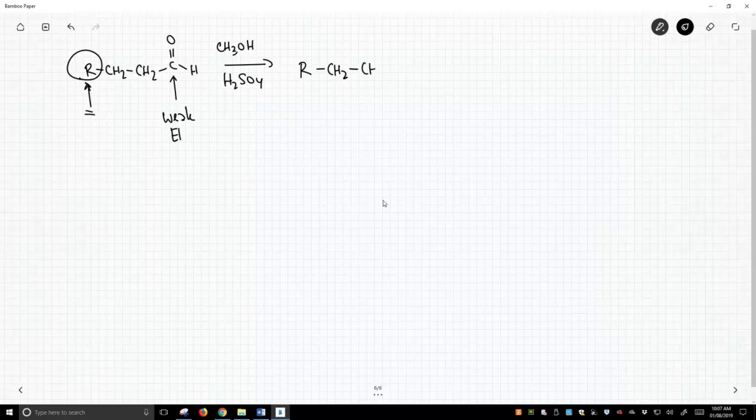Well, we're going to convert the aldehyde into an acetal. So here we get our acetal. Notice we have a weak electrophile in this aldehyde. Now the acetal is no longer a carbonyl. It's no longer a weak electrophile. In fact, if anything, it's kind of like an ether.